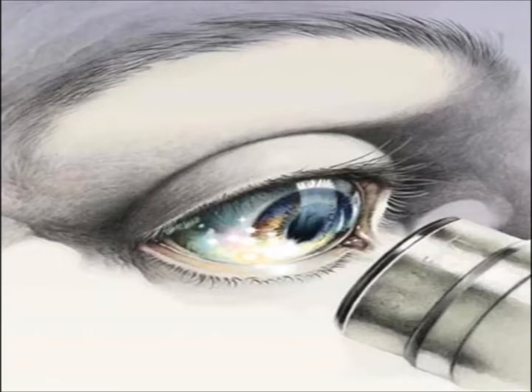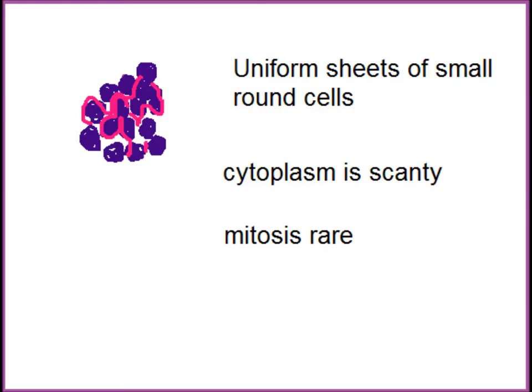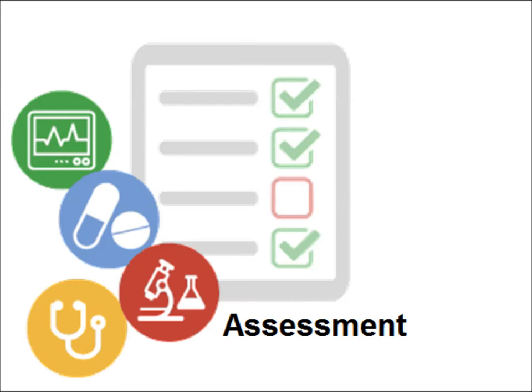On gross examination, there is a fleshy tumor involving the medulla, with areas of hemorrhage and necrosis. Microscopically, the photomicrograph shows sheets of uniform, cohesive cells slightly larger than lymphocytes, with rare mitosis. In the sketch: uniform sheets of round cells, scanty cytoplasm, and rare mitosis.